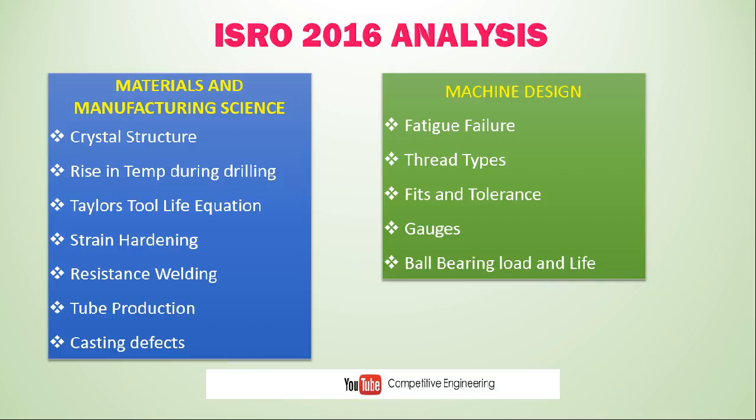From Machine Design, there were only four or five questions. Topics included fatigue failure, shot peening, thread types for particular applications, fits and tolerances, gauges for specific applications, and ball bearing load — specifically the relation between bearing life and load. Concept videos on these important areas are being prepared; you can subscribe to the channel.